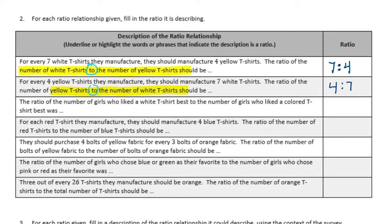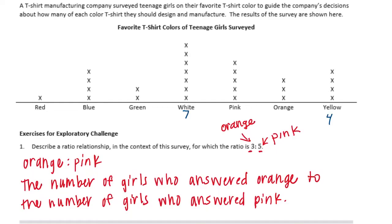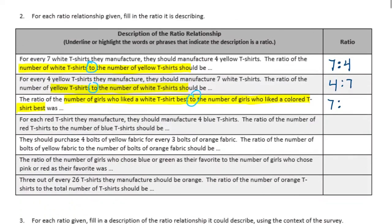The next one: the ratio of the number of girls who liked white t-shirts best to the number of girls who liked colored t-shirts best. White is 7. We need to know the total number of colored t-shirts — meaning all shirts that are not white. We have 1 red, 4 blue, 2 green, 5 pink, 3 orange, and 4 yellow. Adding those: 1 plus 4 plus 2 plus 5 plus 3 plus 4 equals 19. So this would be 7 to 19.